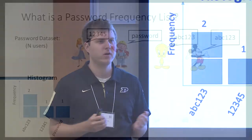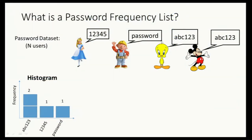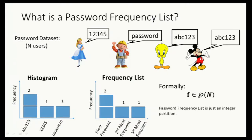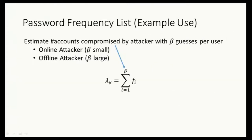What do I mean when I talk about a password frequency list? We start with a data set — a collection of users and the passwords they may have selected. From this we can produce a histogram: for example, ABC123 has frequency 2 and frequency 1 for other passwords. We can then abstract one level further, delete the passwords from the list, and this is the final frequency list — just a list of numbers in descending order. Formally, it's a partition of the number n, where n is the total number of users.